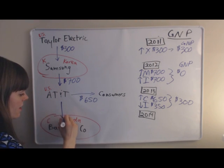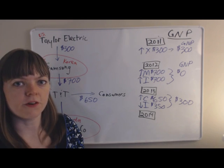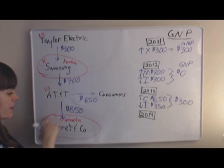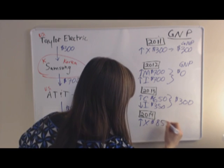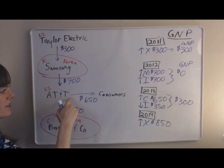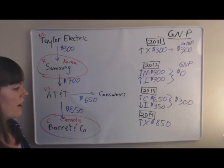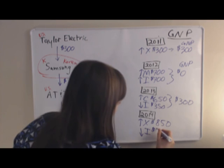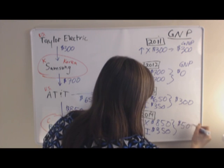In 2014, AT&T sells to Barrett & Company, a consulting firm — those cell phones are part of Barrett's capital investment. They sell for $850. Since we're crossing a border going away from the U.S., this is an export — increase in exports of $850. We also need a drop in inventories for previously accounted value. Since some of the phone value was created by Samsung in the past, we net that out: a decrease in inventories of the other half, $350. GNP in 2014 is $500.